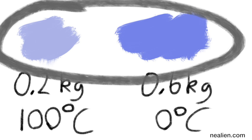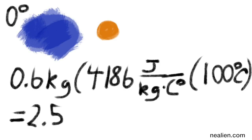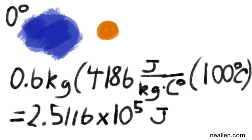At this point we no longer have steam or ice — we only have two portions of liquid water, but at different temperatures. They're going to reach equilibrium when in contact. All the excess heat from the steam turning into liquid water combines with the colder water. We take 0.6 kilograms, multiply by the specific heat of water — 4,186 joules per kilogram times degrees Celsius — and multiply by a change in temperature of 100 degrees Celsius. That would take 2.5116 times 10 to the fifth joules of energy.